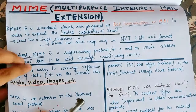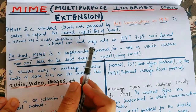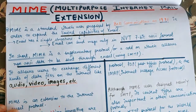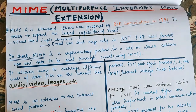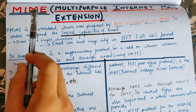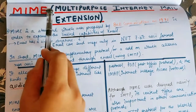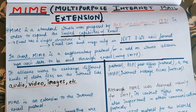In the previous video, I already explained that if we are sending an email, then email can only be sent in a specific format called the NVT 7-bit ASCII format. And if we have data in audio format, video format, or any other specific format except this particular format, then we were not able to send the messages.